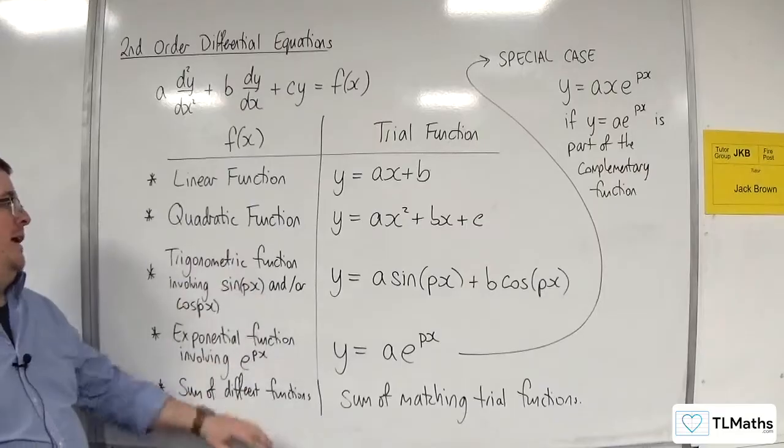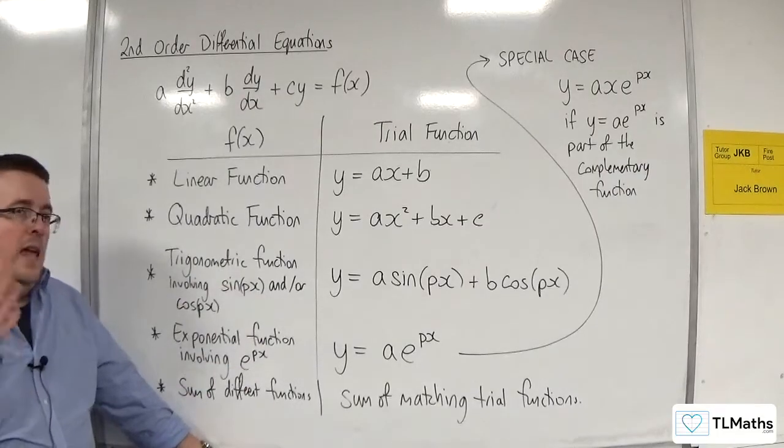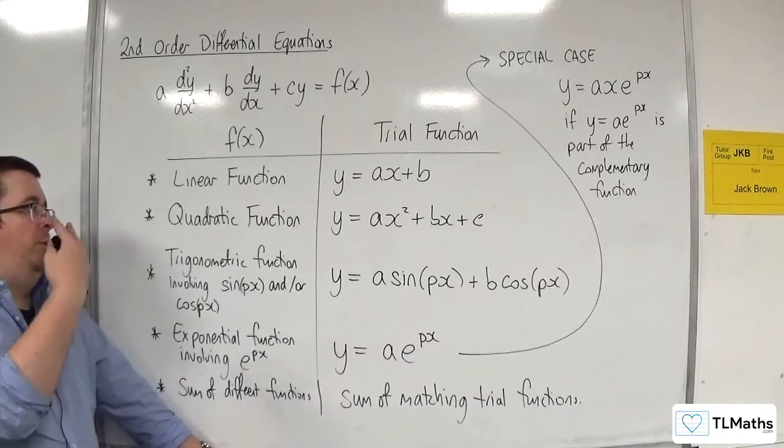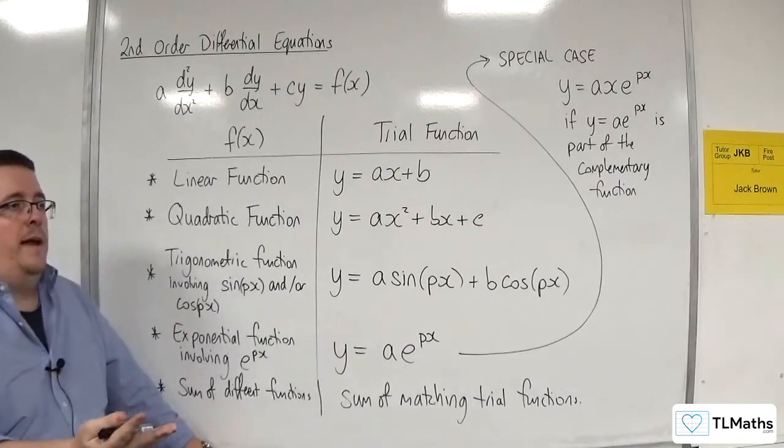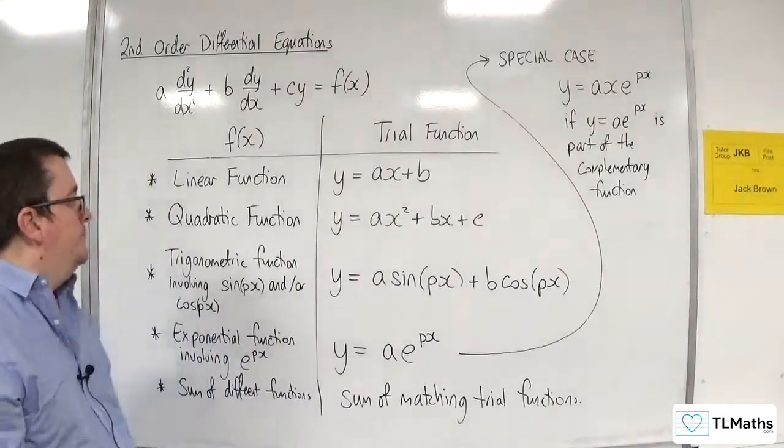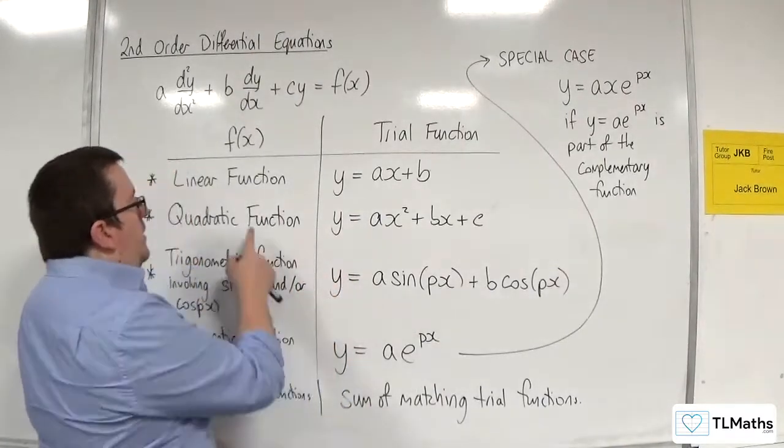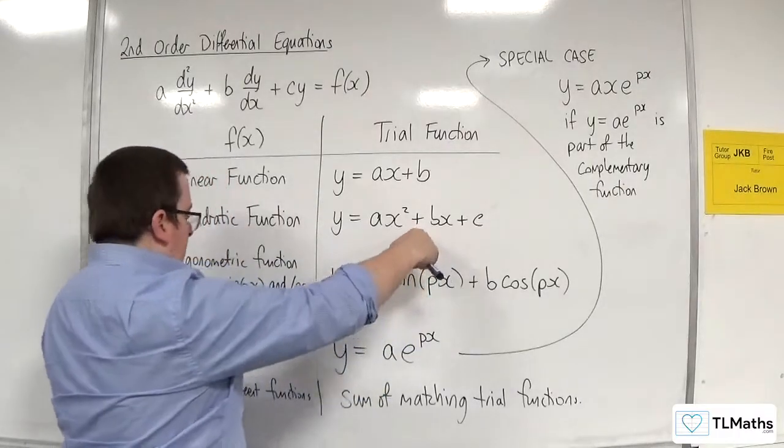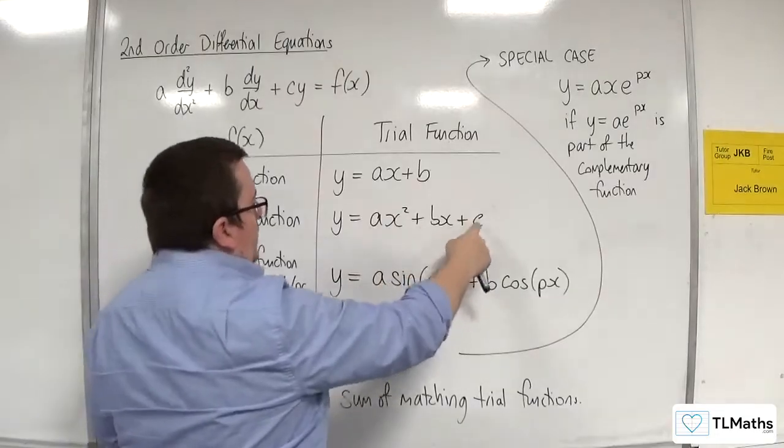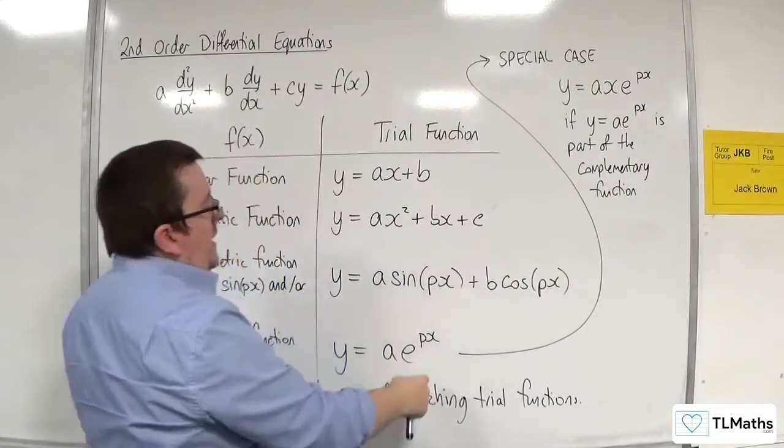So I'd need to take account of the linear function and the trigonometric function. If f of x was equal to x squared plus 5e to the 2x, then I would need a trial function which is the quadratic and the exponential. So I'd have ax squared plus bx plus c plus d e to the px.